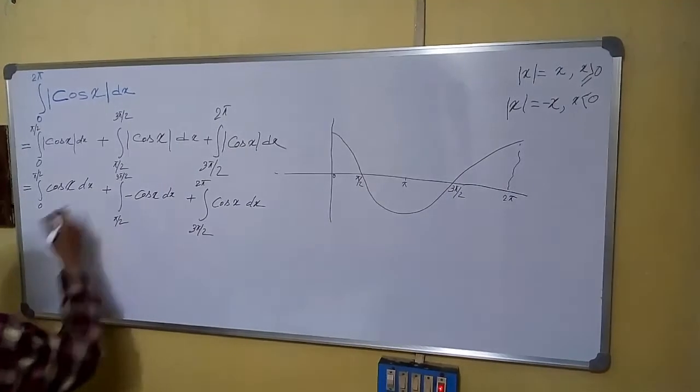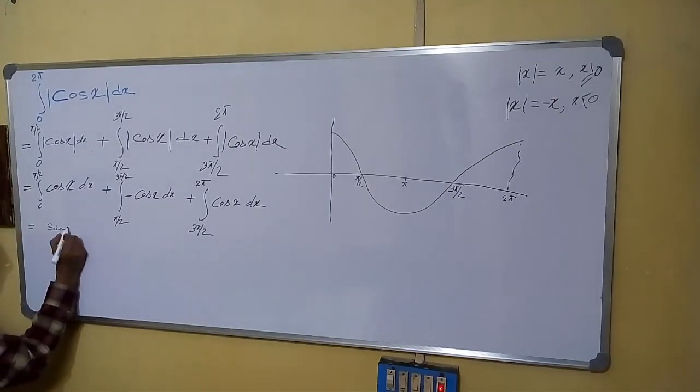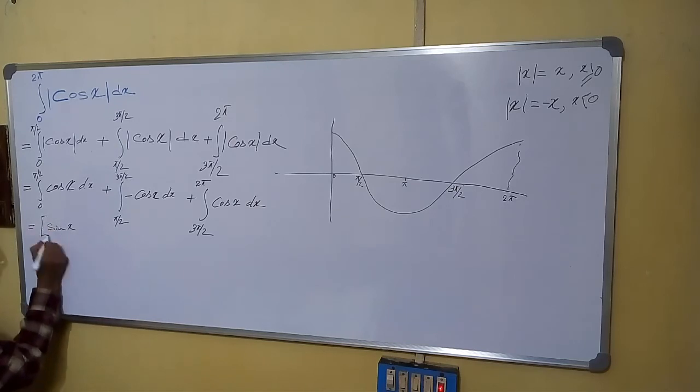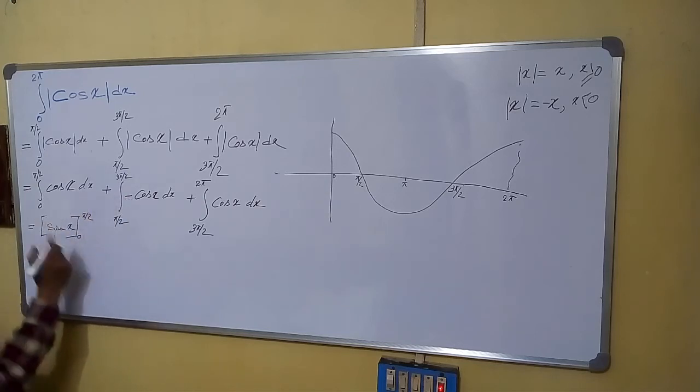You are knowing integral of cos x is sin x. So, it will be sin x from 0 to pi by 2, plus, we can bring this minus.